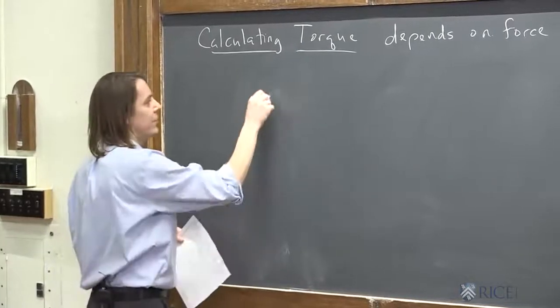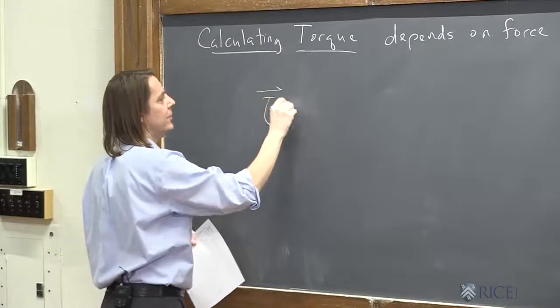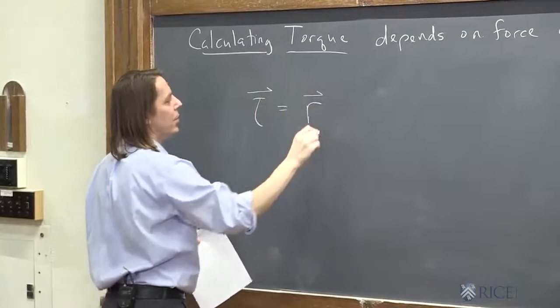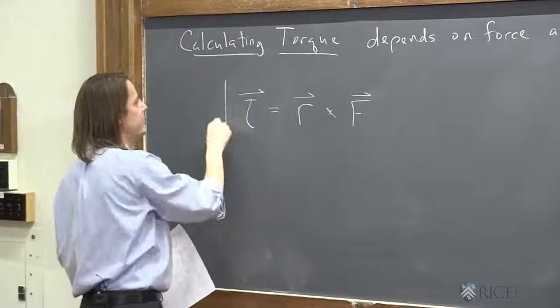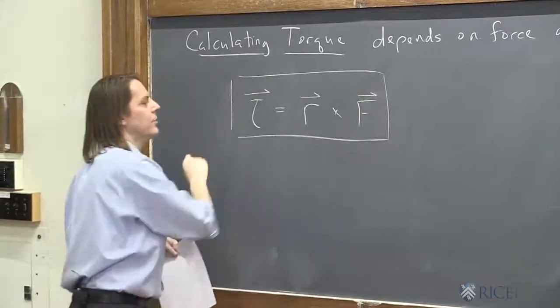So the formula is a vector formula. So torque is a vector. And we've got this R as a vector. And we're going to cross it with the force that's creating the torque. So T, or tau, is R cross F.